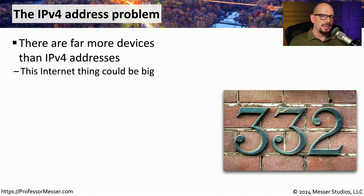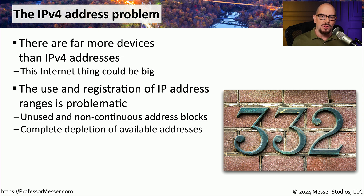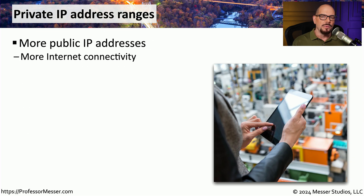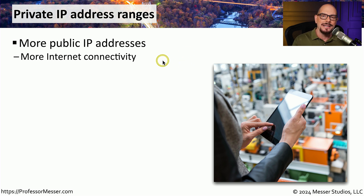One of the challenges with IPv4 is that there are far more devices in the world than there are IPv4 addresses. In recent years, we've used up all of the available blocks of IP version 4 addresses and no new blocks can be assigned. One way we've extended the functionality of IPv4 is to create assignment of IP address ranges that can only be used on the inside of a network — referred to as private IP address ranges — and anything that is a private IP address cannot be routed on the public internet.